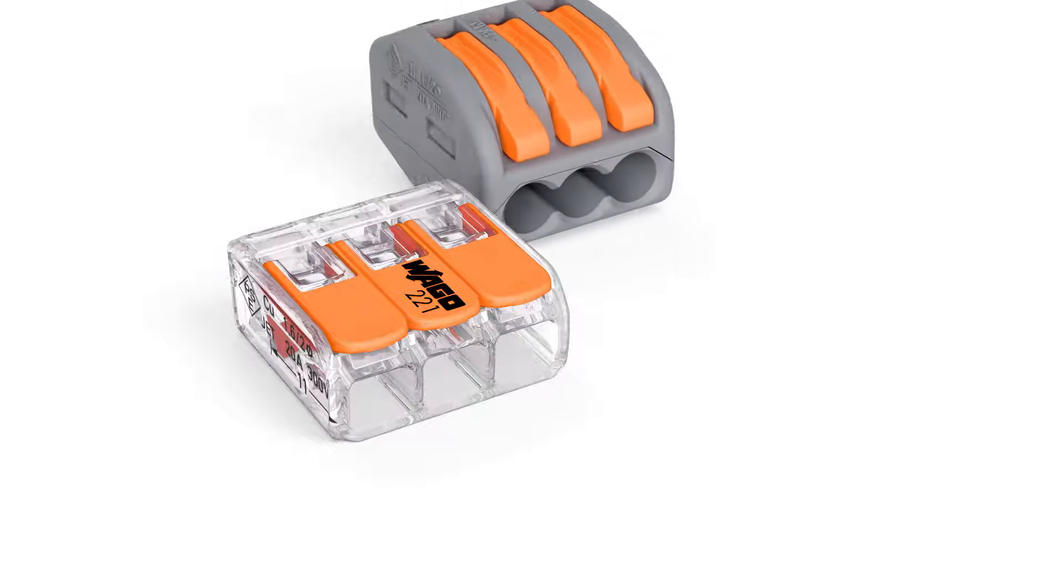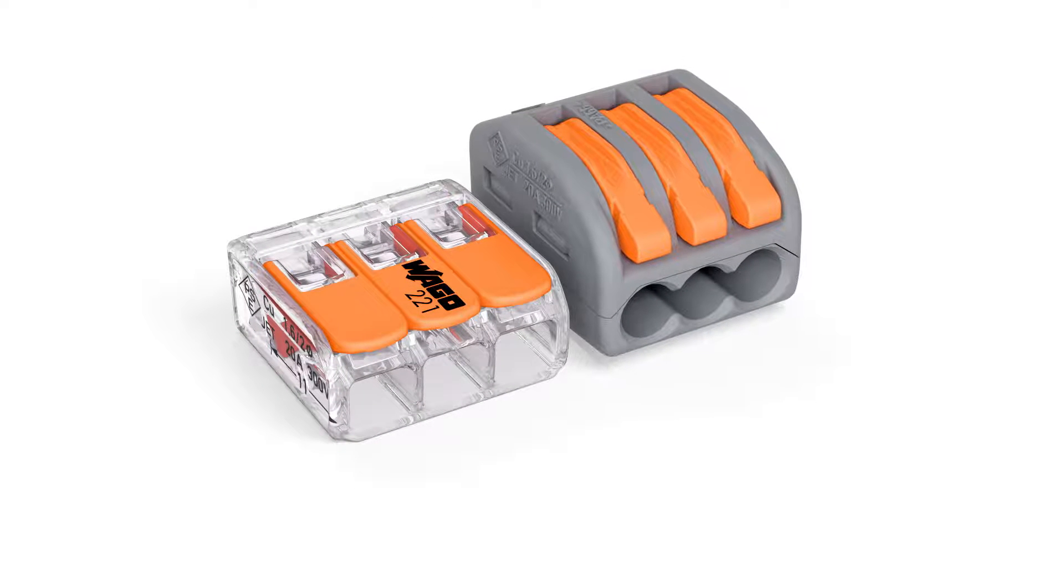Wago's 221 series compact splicing connector for all conductor types saves 40% more space than its predecessor, thanks to a significant reduction in size.